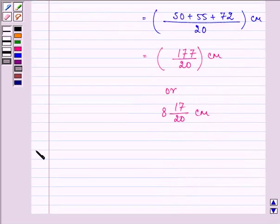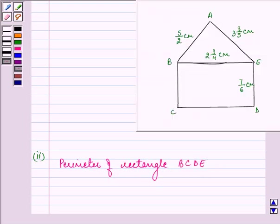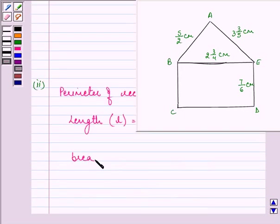Now let's proceed on with the second part. In the second part, we need to find out the perimeter of the rectangle that is BCDE. Now we have the length of this rectangle as CD which is equal to BE that is 2 and 3 by 4 centimeter. And we have the breadth as 7 by 6 centimeter.